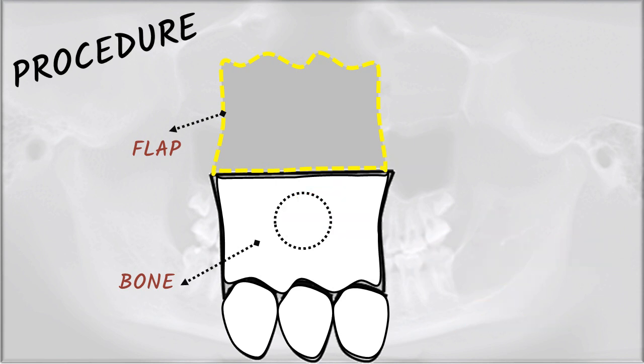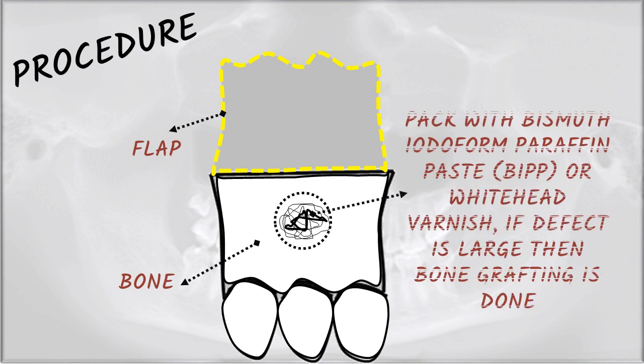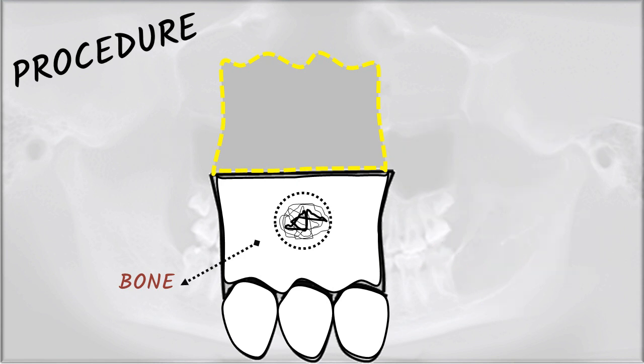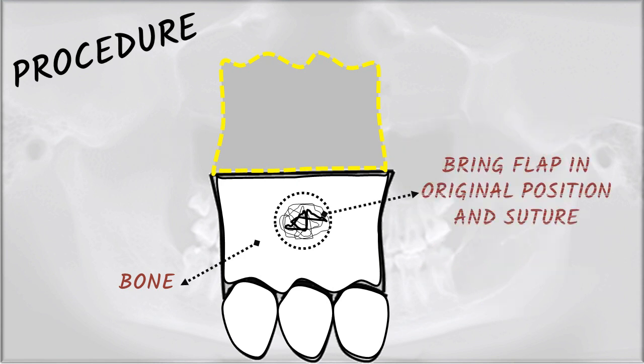Next, remove the cyst completely and irrigate the cavity thoroughly. Then pack the cavity with bismuth iodoform paraffin paste or Whitehead's varnish. If the defect is large, bone grafting is also done. These names are very important from a competitive exam point of view. After that, bring the flap back to its original position and suture.